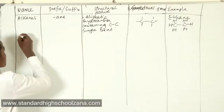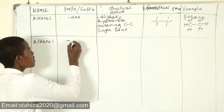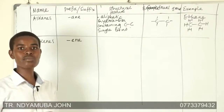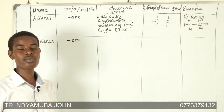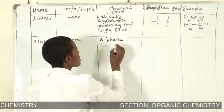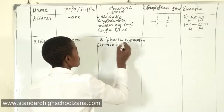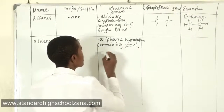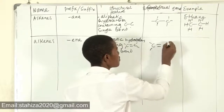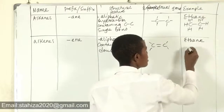Then we look at alkenes. The suffix or ending is '-ene', so we hear names like ethene, propene, but-1-ene, but-2-ene, pent-1-ene, pent-2-ene, and so on. The structural feature is aliphatic hydrocarbons containing a carbon-to-carbon double bond. The functional group is the carbon-to-carbon double bond. An example is ethene as the simplest and first member.